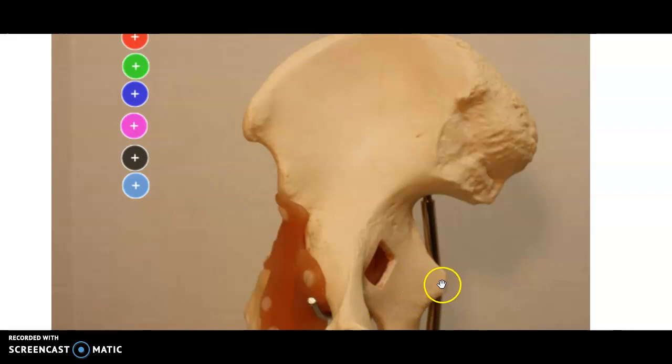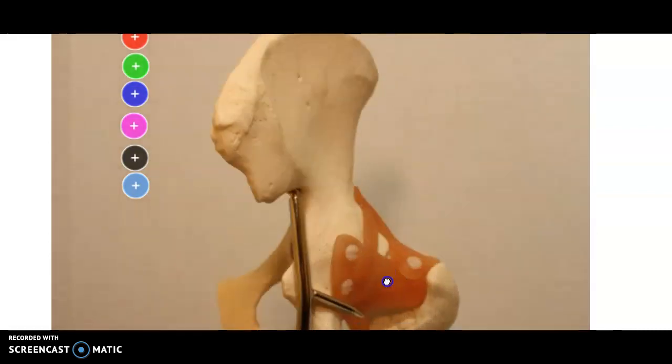We have the ischium back there with the ischial spine. If I keep rotating it a little bit more, there's the ischial spine. There is the posterior inferior spine. There is the posterior superior spine.